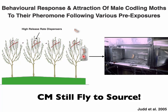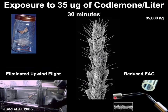Gary applied pheromone dispensers to orchards, then placed codling moth males in bags hung in the trees for 24 hours to receive whatever background pheromone concentration the dispensers created. He then took those males back to the lab and tested whether they would still fly upwind to a pheromone source. Sure enough, those codling moths still flew to the source. Gary then determined it would take 30 minutes of exposure to concentrations of about 35 micrograms of codling moth pheromone per liter of air to eliminate their upwind flight and affect the sensilla — a lot of pheromone over quite a period of time.